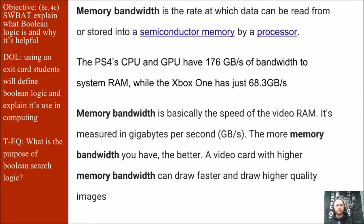Memory bandwidth may be the hardest concept to wrap your mind around, but it's just another data point for us to extract and look at. Memory bandwidth is essentially the rate at which data can be read from or stored into a semiconductor memory by a processor — I mention semiconductor because we just spent the entire unit studying transistors and talking about memory in that sense. The PS4 CPU and GPU both have a bandwidth of 176 GB per second, while the Xbox One has just 68. To wrap your mind around this: a video card with higher memory bandwidth can draw faster and draw higher quality images, so you get a mixture of better resolution and frames per second with a higher bandwidth.